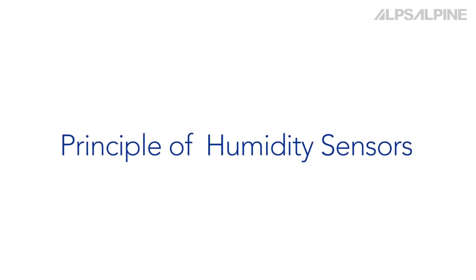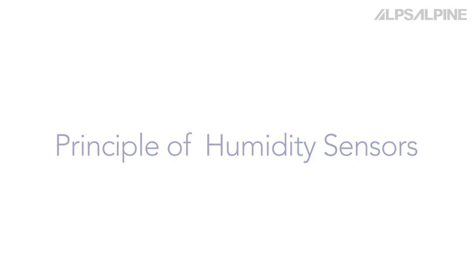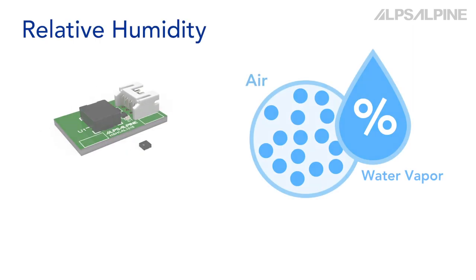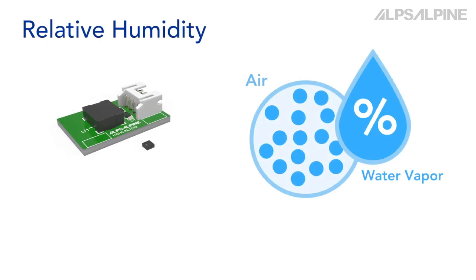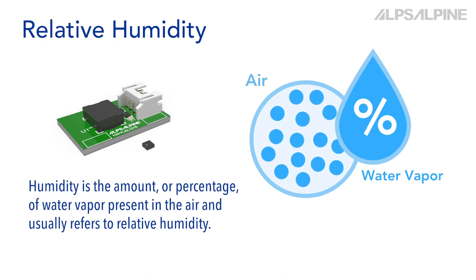Here we introduce the sensing principles behind AlpsAlpine's humidity sensors. Humidity sensors measure humidity in a variety of ways. Humidity is the amount or percentage of water vapor present in the air and is usually referred to as relative humidity.